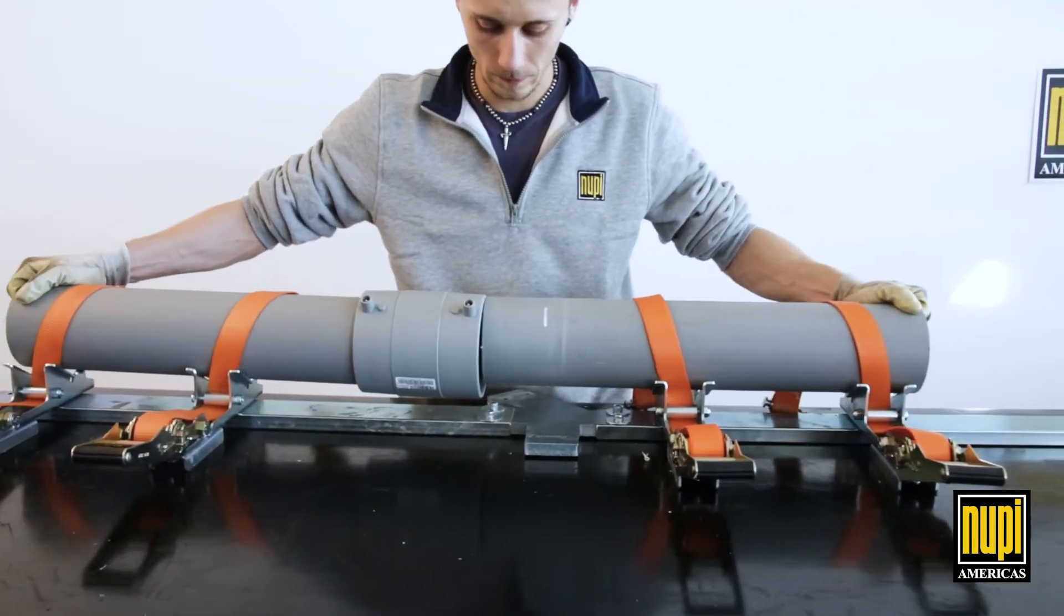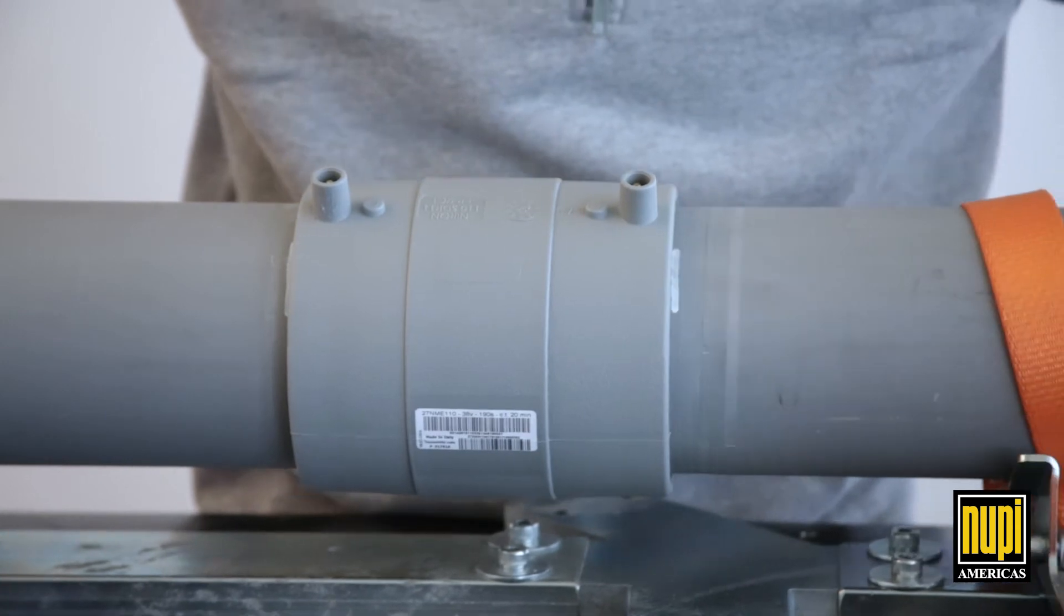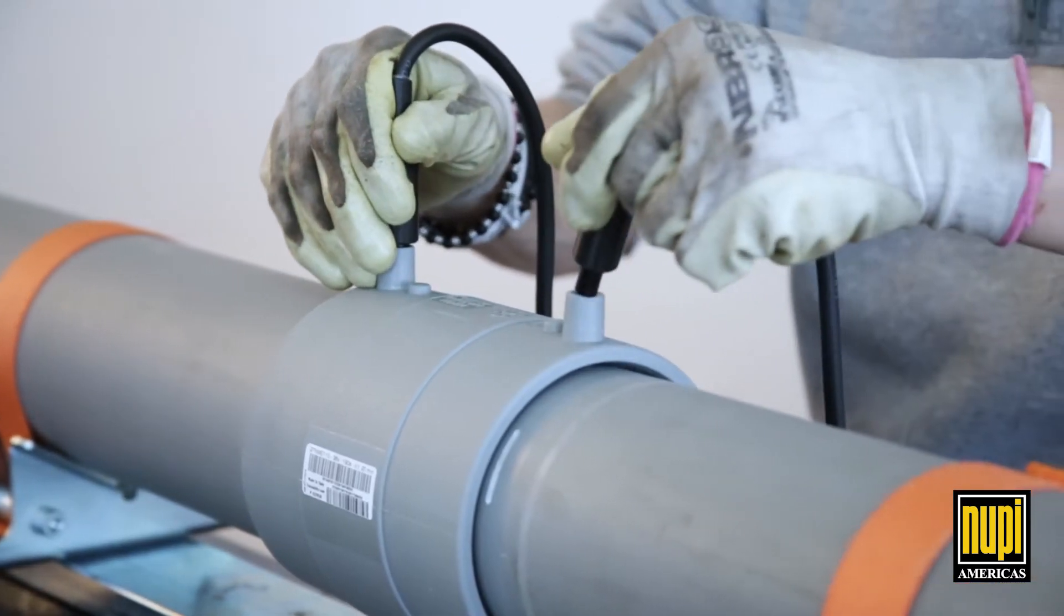Insert the pipe or spigot ends into the fitting up to the marked insertion length. Connect the welding cables to the fitting connectors.